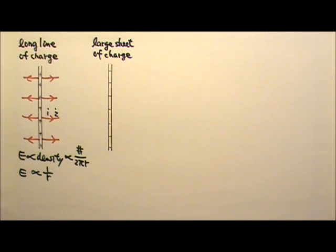What if we have a large sheet of charge? Suppose this is a uniformly charged plate with negative charges. By symmetry, the field lines would go into the plate perpendicular to the plate in the middle. On the top it would go straight down, here straight up, and in between the lines would be curved.